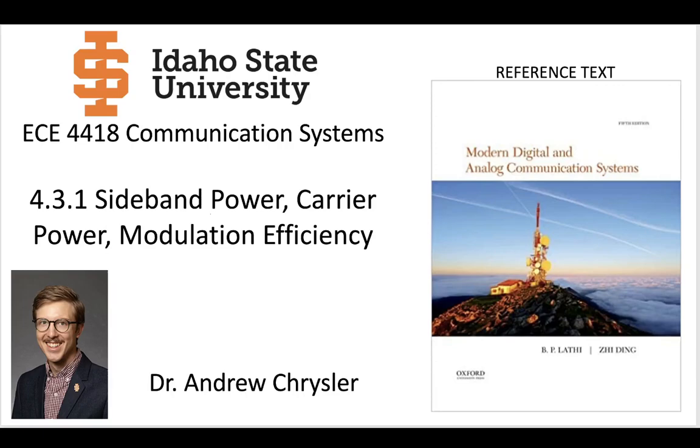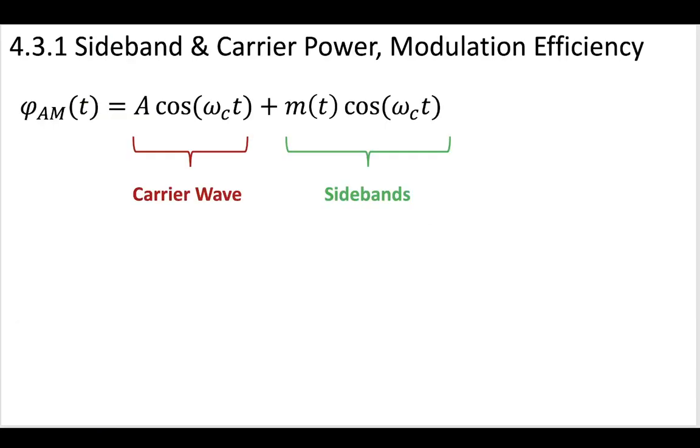The first thing, we said that if we were to describe an amplitude modulated wave, a signal, and we call this phi AM, we could say that it's composed of a carrier wave and sidebands. So that carrier wave has some set constant amplitude multiplying the cosine with our carrier frequency, whereas the sidebands have the message modulating the cosine wave with our carrier frequency. So one of these contains some new information that we care about, that we want to tell someone about, and the other does not contain any new information.